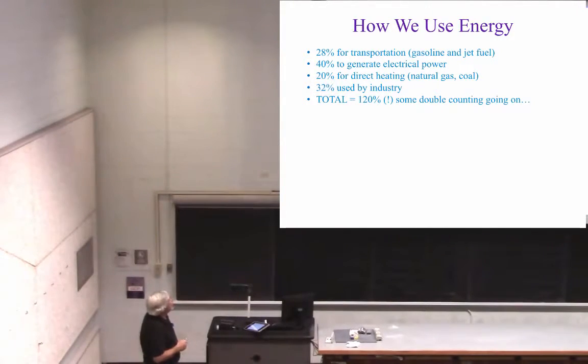32%, about a third of our energy consumption only, is used by industry. Now, that adds up to 120%, and it means there's some double counting going on. So, for example, industry, in addition to using energy to run a machine, is using energy to heat the plant, to heat the building. So, there's double counting going on. That's why it adds up to 120%.